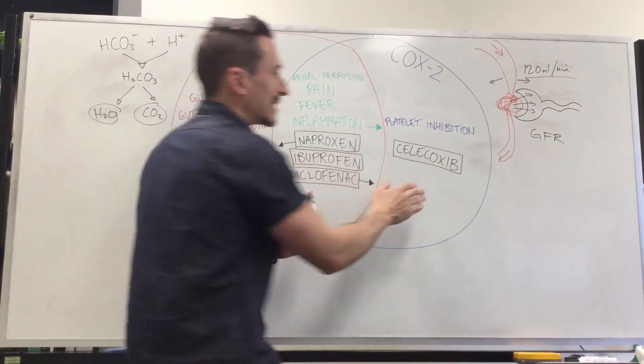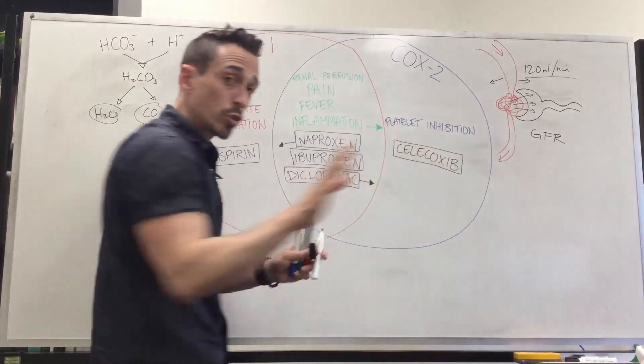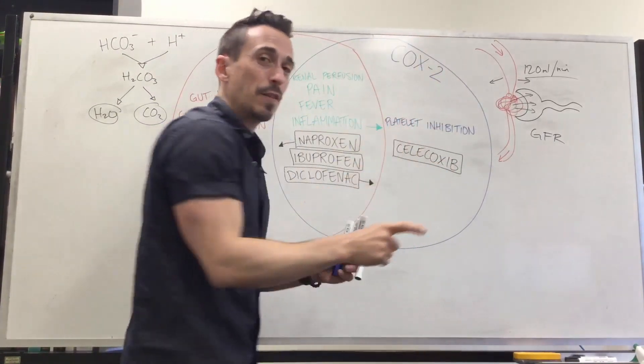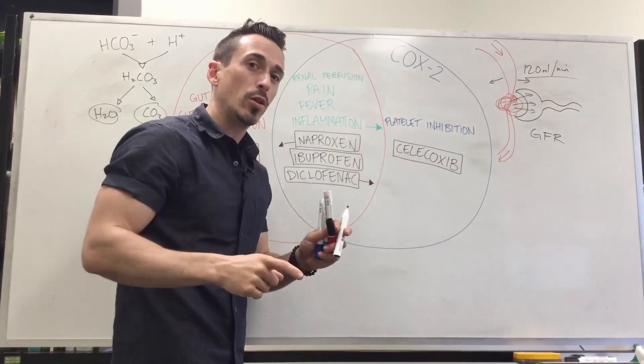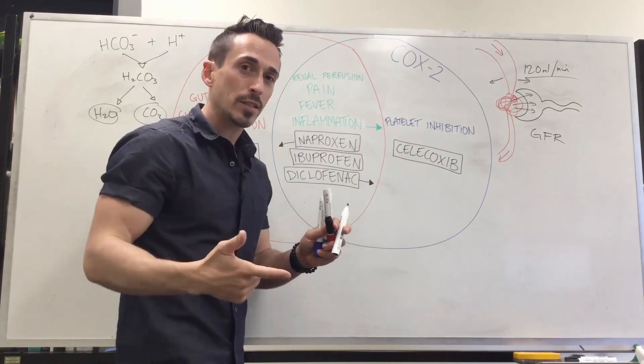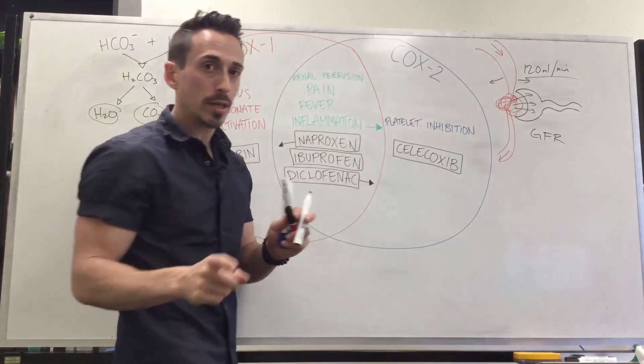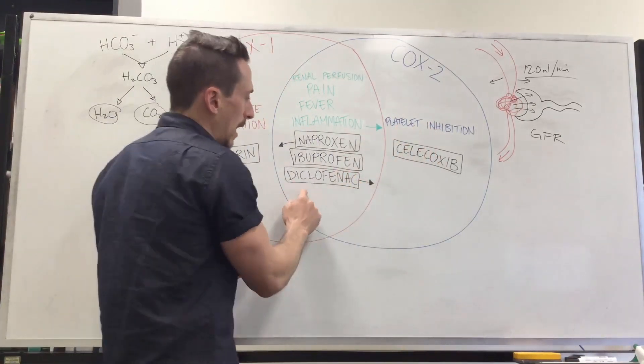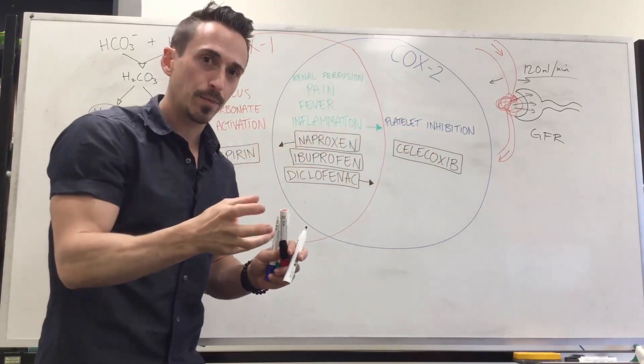However, celecoxib has now been shown to not significantly affect this, which is great because all the previous COX-2 specific drugs resulted in an increased likelihood of stroke and cardiovascular effects, like a heart attack, because they increased clotting. Celecoxib seems to not significantly have this effect, which is great. Voltaren may have a slight increased clotting effect.